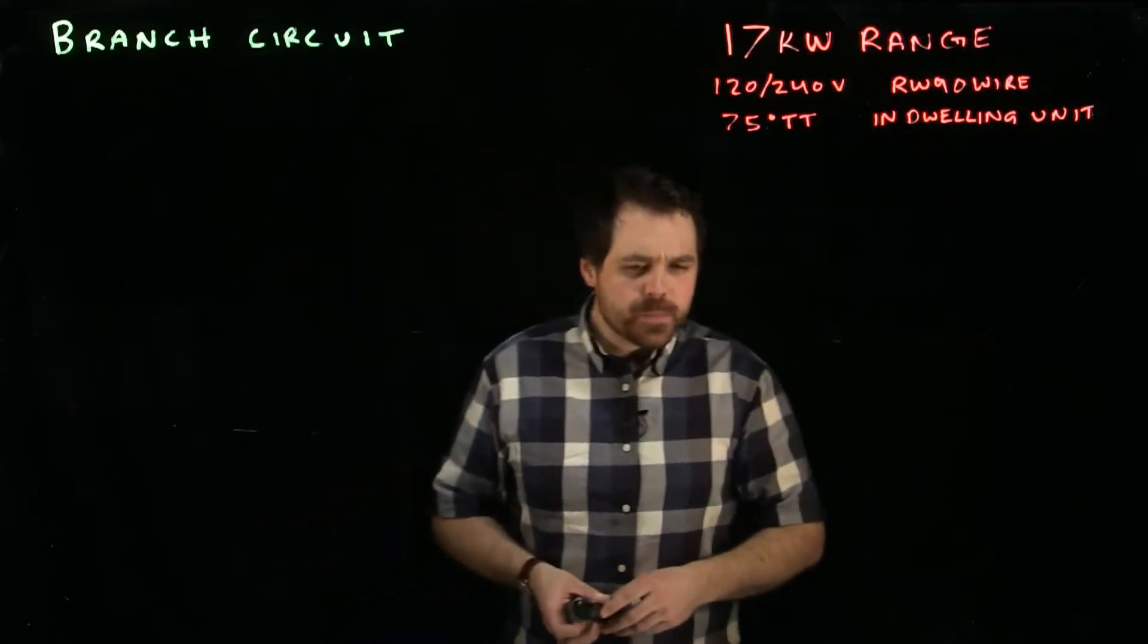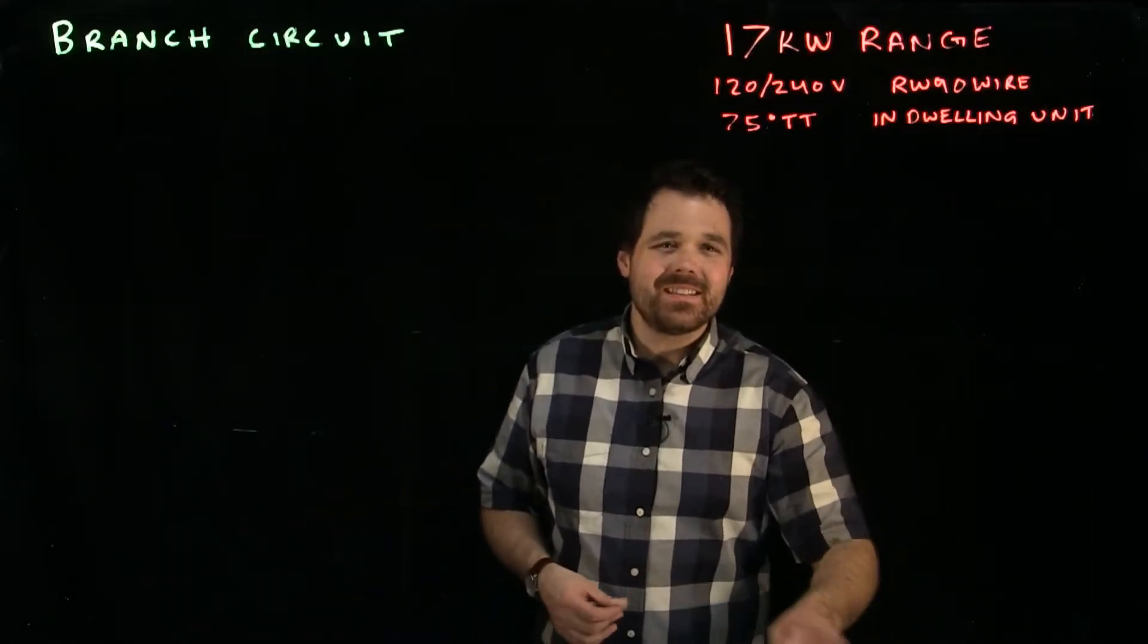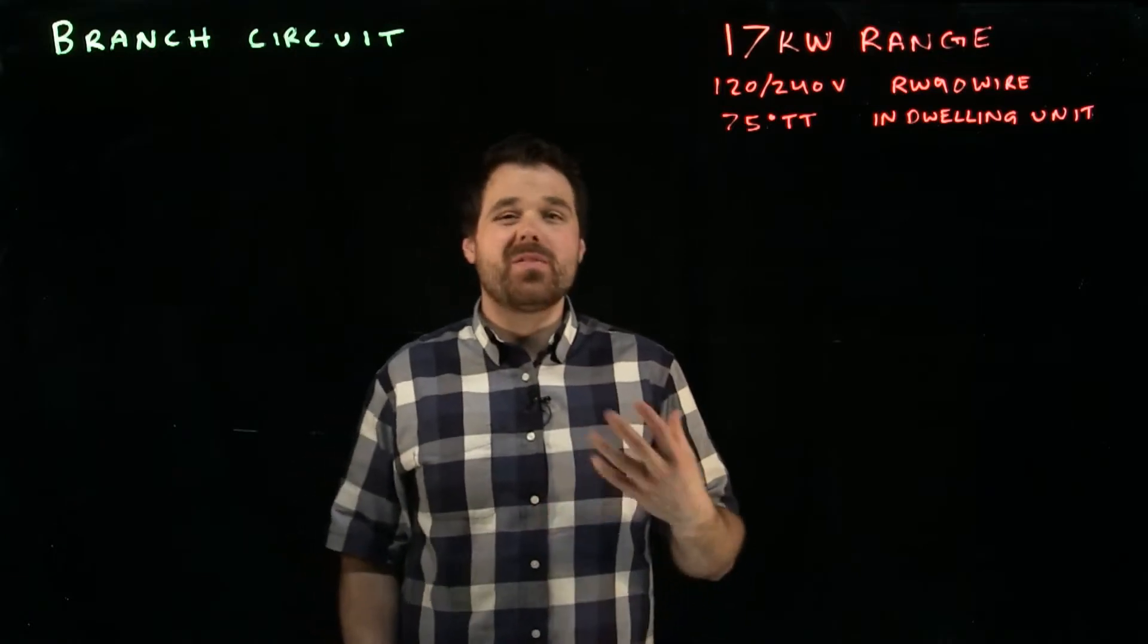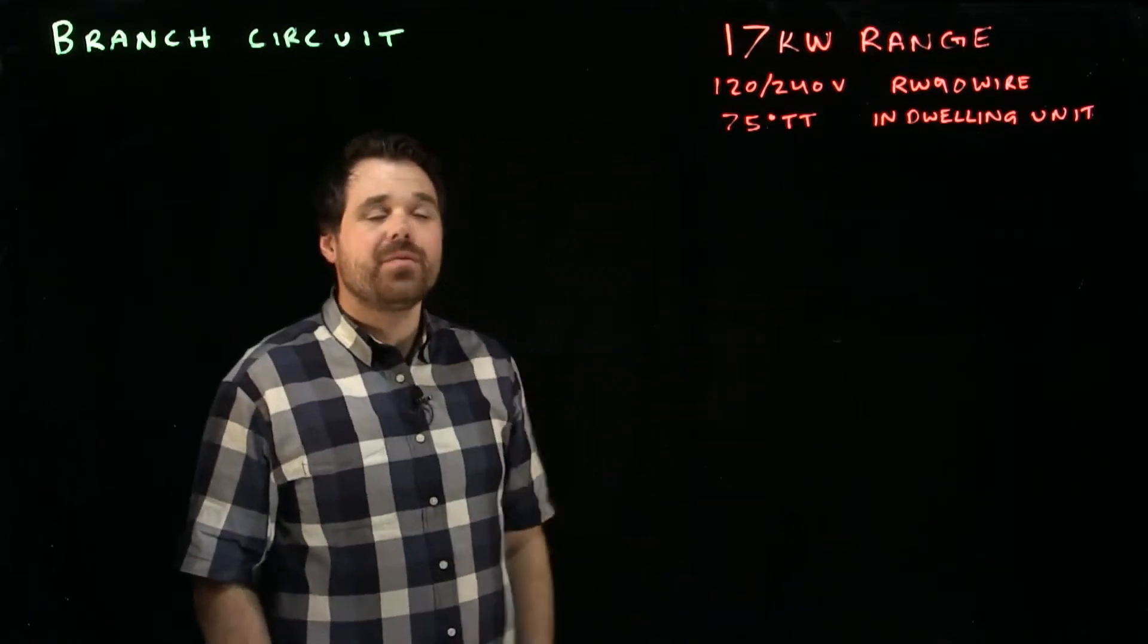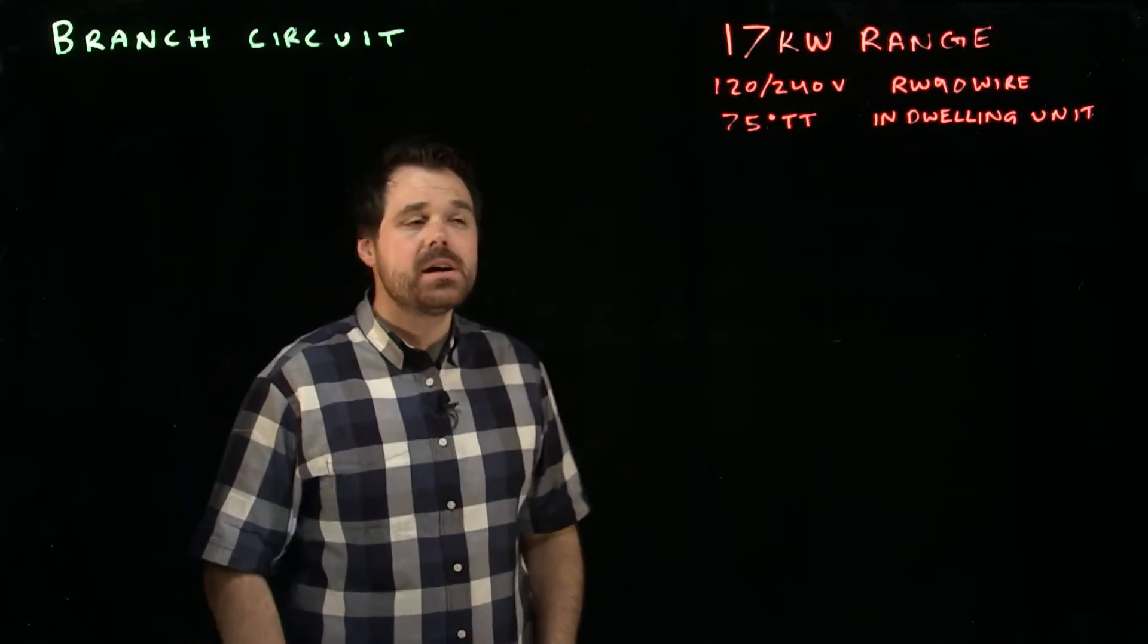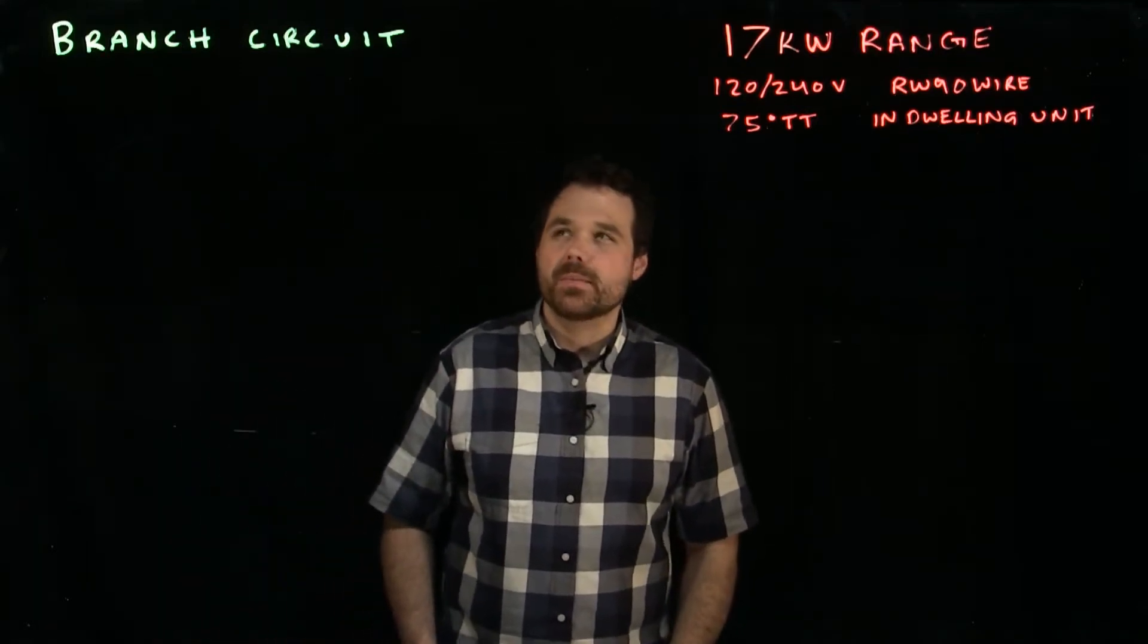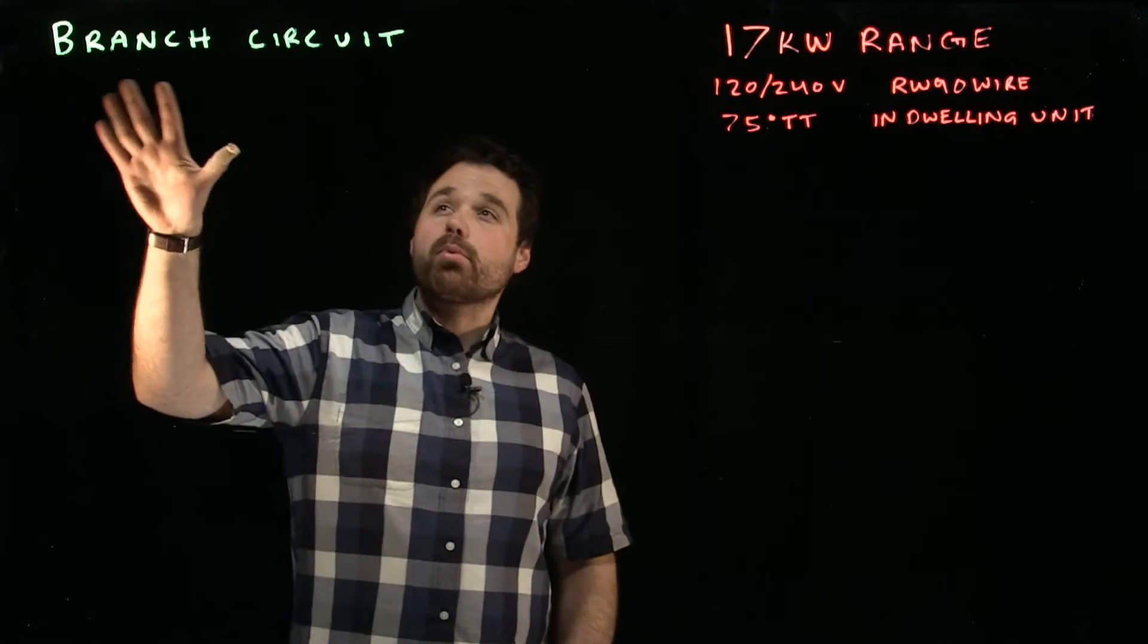Hi, welcome. I want to talk about sizing the conductor and overcurrent device for a range in a dwelling unit, 12-240 RW90 wire, 75 degree termination temperature. I want to talk about sizing the branch circuit.